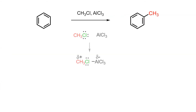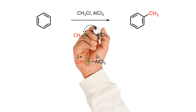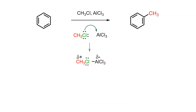Benzene will not react with an alkyl halide unless a Lewis acid is present to activate the electrophile. Complexation of the Lewis acid with the electron-rich leaving group causes the electrophilic carbon to become even more electron deficient and thereby more reactive with nucleophiles.